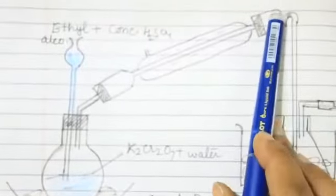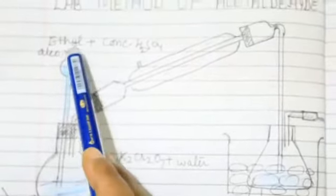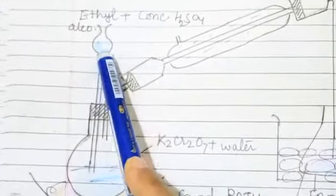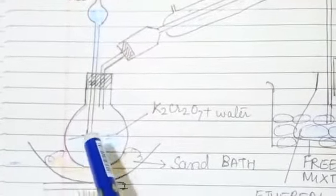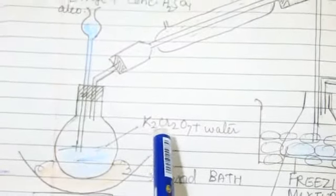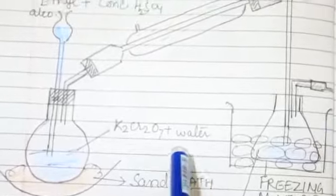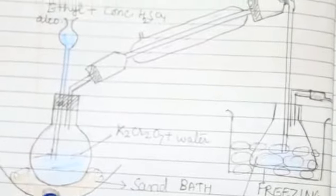Now, next preparation is acetaldehyde. In lab, we pour ethyl alcohol and concentrated H2SO4 by thistle funnel into the round bottom flask. In the round bottom flask, potassium chromate with water is present. This is the sand bath.